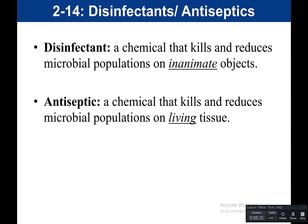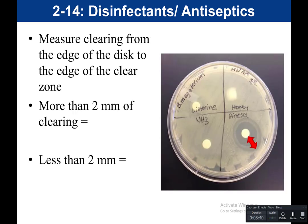After setting up the experiment and incubating for 48 hours, when you get your plate out, you'll notice that it has a lawn — all that cloudiness and turbidity is bacteria growing on the plate. In this example experiment, one disc was soaked in Listerine, one in honey, one in ammonia, and one in Pine Sol. To see if a chemical is effective at inhibiting microbial growth, you would measure the clearing from the edge of the disc to the edge of the clear zone, measuring in millimeters.